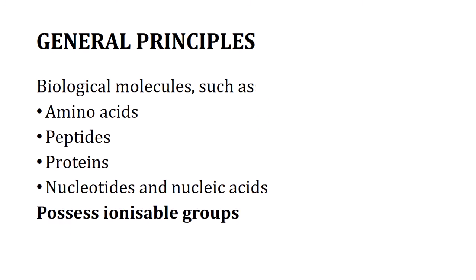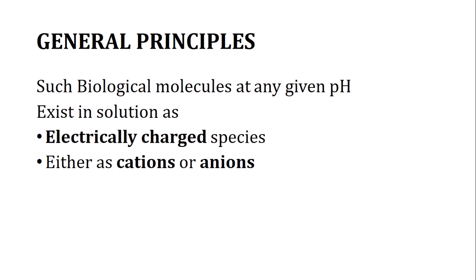Now if you talk about molecules like amino acids, peptides, proteins or polypeptides, nucleotides and nucleic acids, all these biomolecules possess ionizable groups. When I am saying ionizable groups, it means they can be either positively charged or negatively charged. So these molecules at any particular pH exist in charged species, either cationic or anionic.